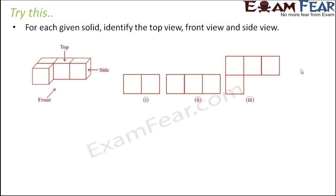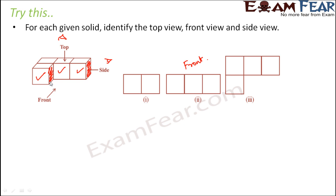For each given solid, identify the top view, front view, and side view. Looking at the first arrangement of cubes: from the front, you see three squares — the two outer squares and the center one, not the side squares. From the side view, you see two squares facing sideways. From the top view, you see four squares located on top. Those are the front, side, and top views respectively.